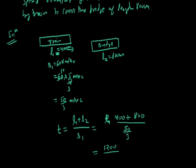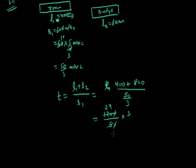Now 50 by 3, 3 shifts to the top. Zero cancels zero. 120 divided by 5, that is 24 times. And 24 into 3, that is 72 seconds, or we can say that 1 minute 12 seconds. So the train will cross the bridge in 1 minute 12 seconds. Now let's see the next question.